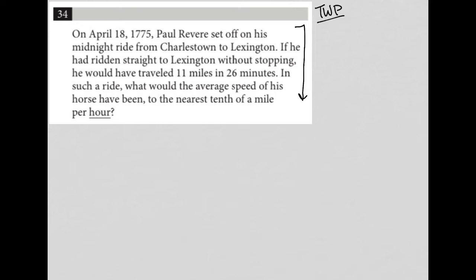The first sentence says, on April 18th, 1775, Paul Revere set off on his midnight ride from Charlestown to Lexington. Okay, makes complete sense. If he had ridden straight to Lexington without stopping, he would have traveled 11 miles in 26 minutes.